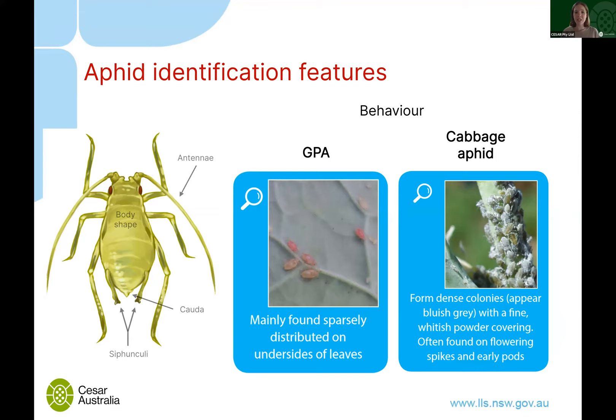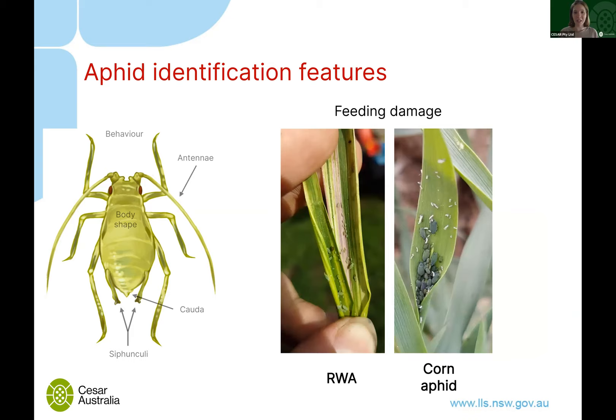Moving away from appearance, behaviour can be a really important indicator. Green peach aphid tends to be more sparsely distributed, moving around in individual groups, whereas cabbage aphid often clumps together in quite dense colonies and gives off a white powder. You can look at how they're moving around the crop and where they're situated relative to other aphids — though you can also have multiple species together, which complicates things.